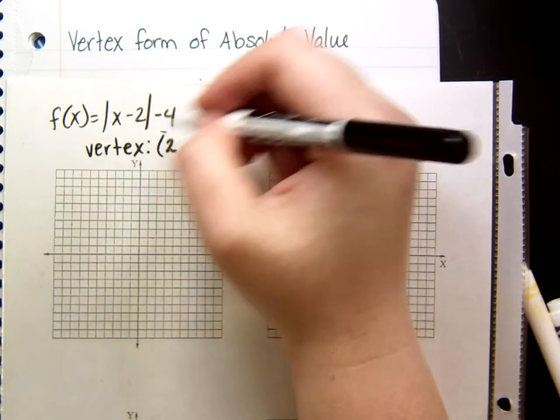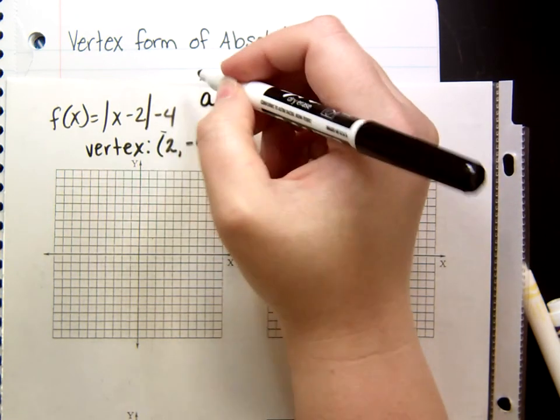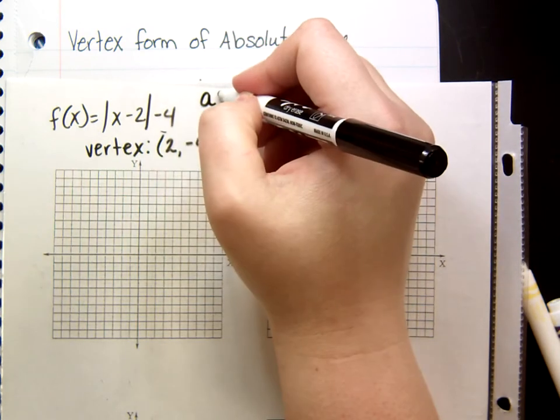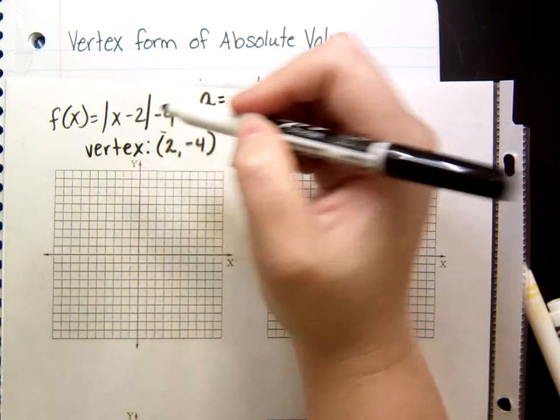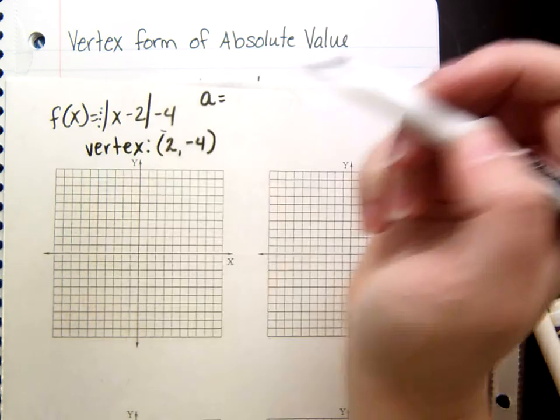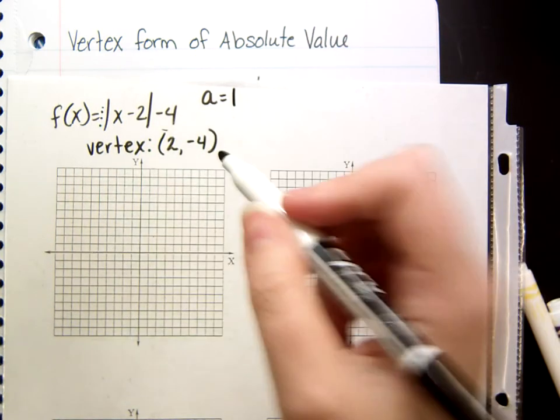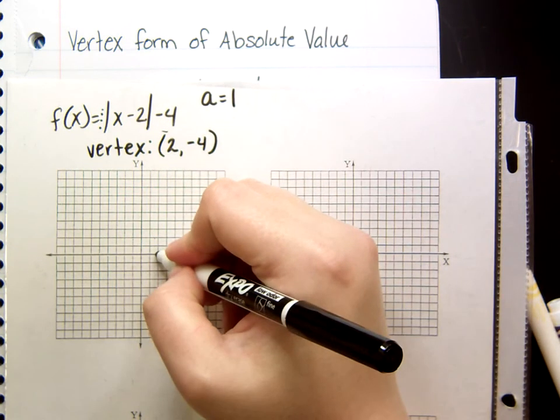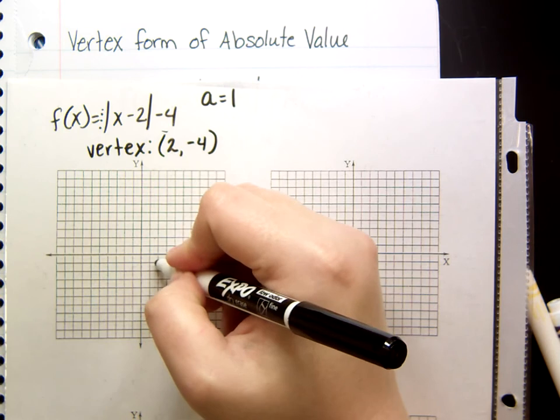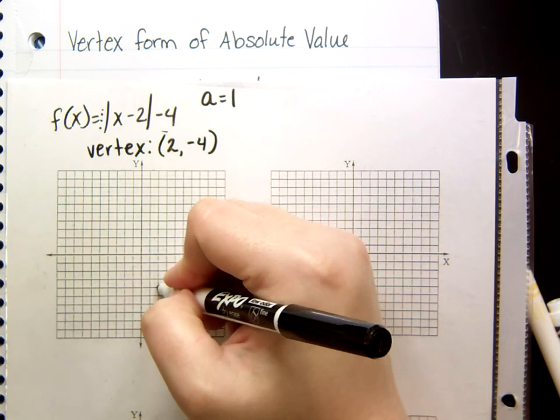Now, the other thing we need is the a value, which is the number out front that the absolute value is being multiplied by. And in this case, there isn't a number written, which means it's a 1. So, to graph this, what I'm going to do is I'm going to plot my vertex. So, positive 2, negative 4. So, 1, 2, 3, 4.